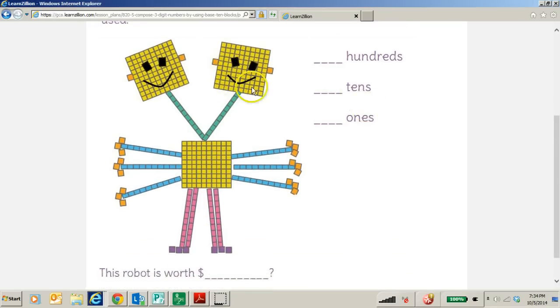So let's look at this robot right here. We can see blocks of 100, we can see groups of 10 in various colors, and we can see individual ones. We need to figure out how much this robot is worth. So pause this recording, and then think about it so that you can come up with the total price.